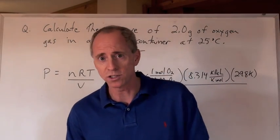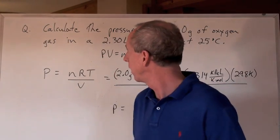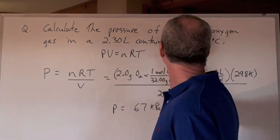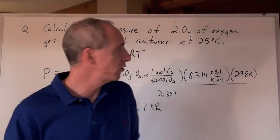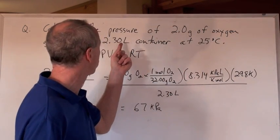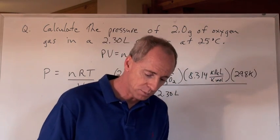Okay, here are some gas law questions. First one, fastball across the plate. Calculate the pressure of 2 grams of oxygen, 2.0 grams of oxygen gas in a 2.3 liter container, 25 degrees Celsius is the temperature.